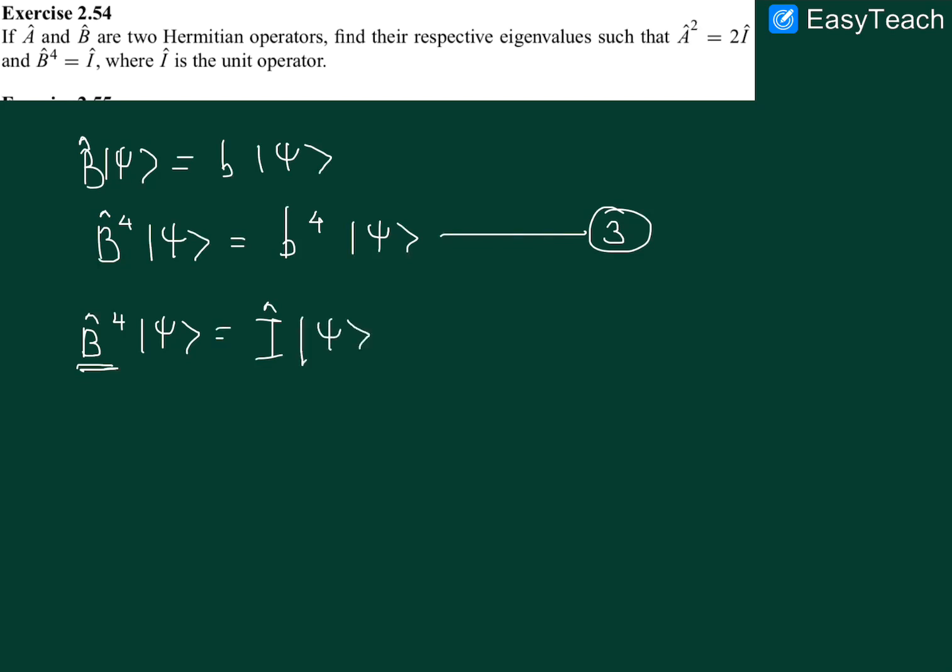Which is applied on psi, that gives us nothing but psi. Let us put this as equation 4. Note that the left hand side of equation 3 and 4 are equal, so we can compare the right hand sides. With this we get b to the power 4 equals to 1, which will give us b square equals to plus minus 1.